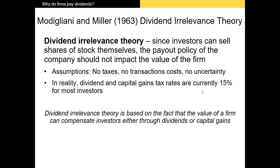There are a number of assumptions that don't hold up in this theory. There are obviously taxes on dividends — the top tax bracket in the U.S. is currently 20% on dividends, while the bottom tax brackets pay 0%. There are also transaction costs for converting stock into cash, and there's definitely uncertainty in the market. So empirically, this dividend irrelevance theory doesn't hold up. However, it does give us a framework for understanding the basis of firm value with regard to cash flows. Dividend-paying firms typically have higher valuations than non-dividend-paying firms.